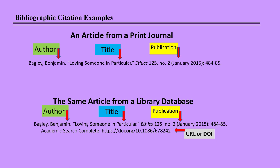Here's a bibliographic citation from a print journal. The author's name is last name first, followed by a period. The title is in quotation marks with a period inside the quotation marks, followed by the journal name in italics, volume number, issue number, date in parentheses, and page numbers, followed by a period.